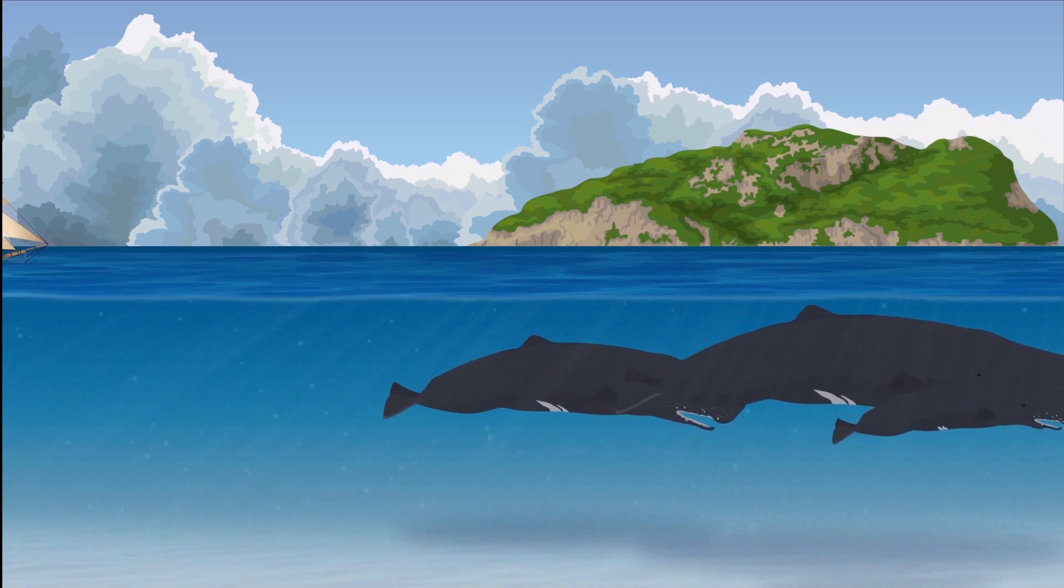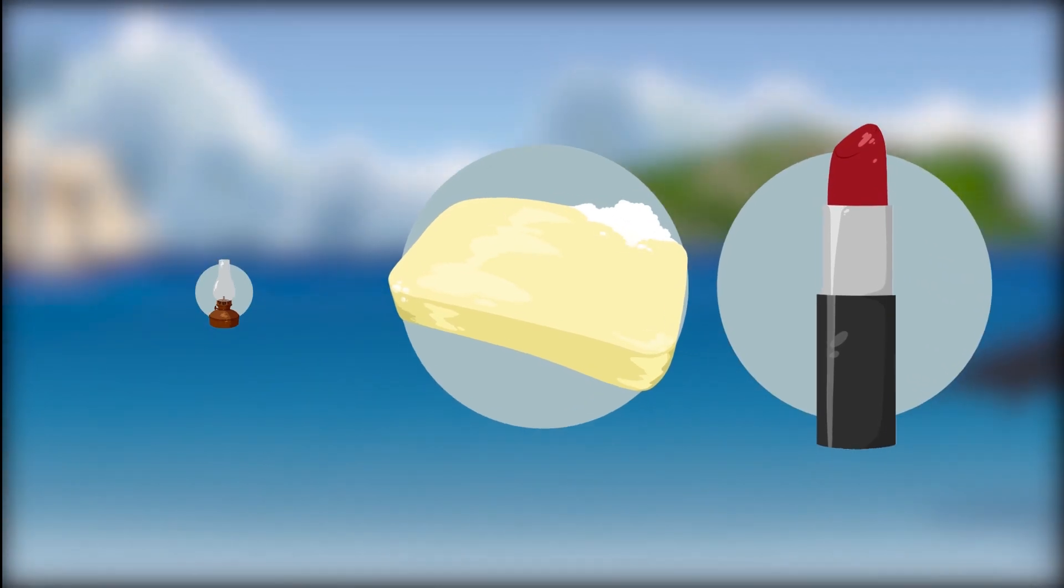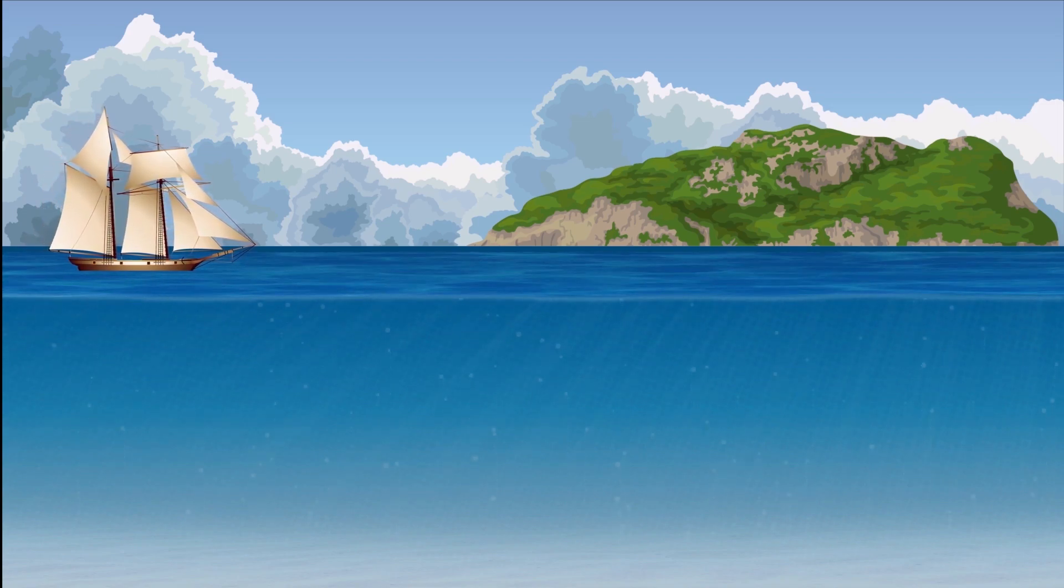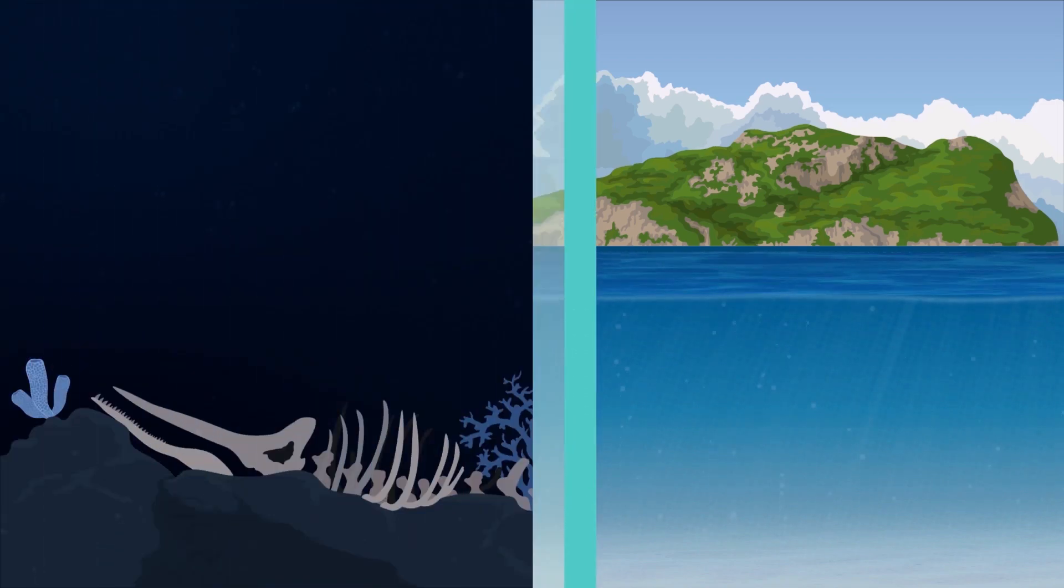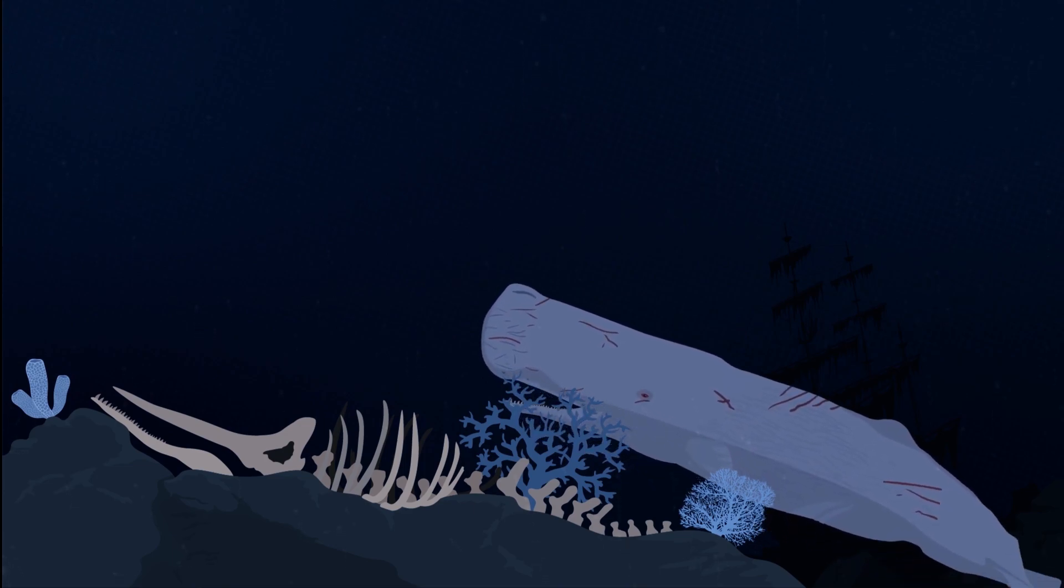Spermaceti was used in a variety of commercial goods, including lamp oils, soaps, and cosmetics. This made sperm whales popular amongst whalers throughout the 18th and mid-19th century, since crude oil hadn't been discovered yet. In fact, the world-renowned novel Moby Dick is based on an albino sperm whale.